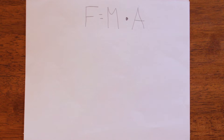The force of gravity is found by F equals M times A — F being force, M being mass, and A being, in this situation, gravity.